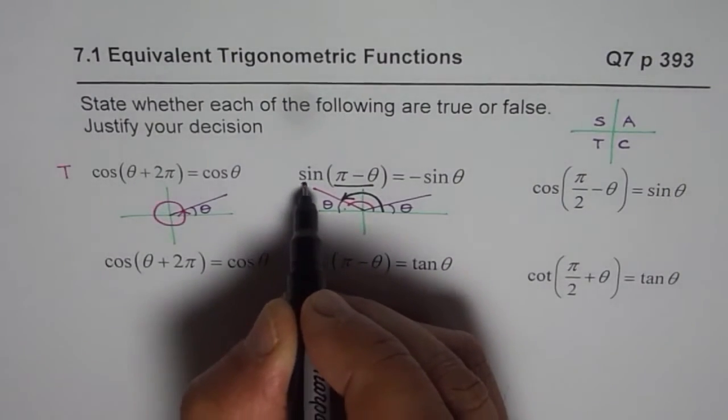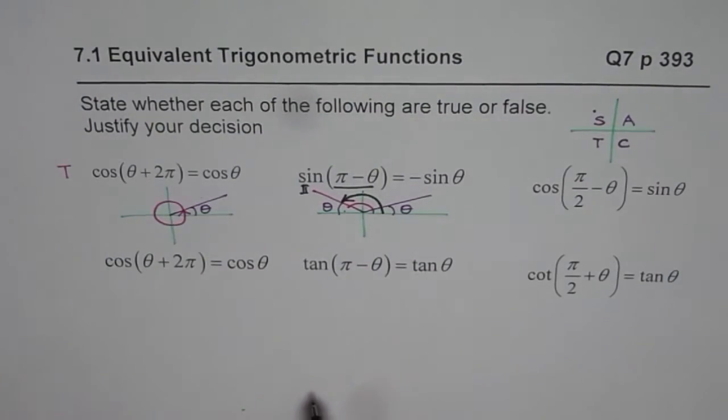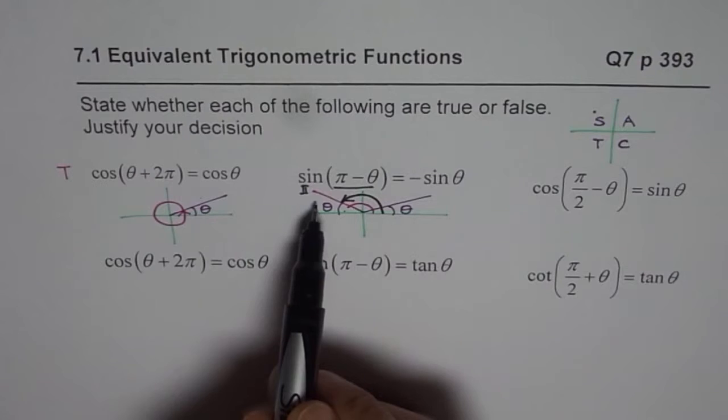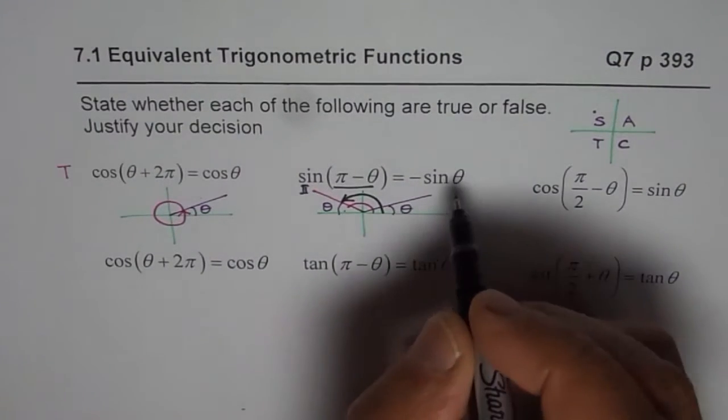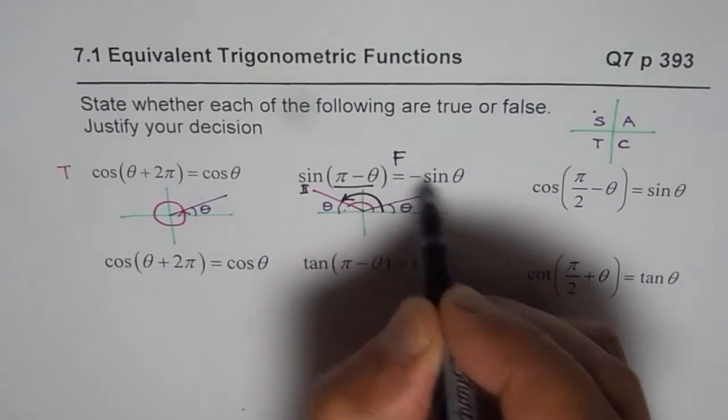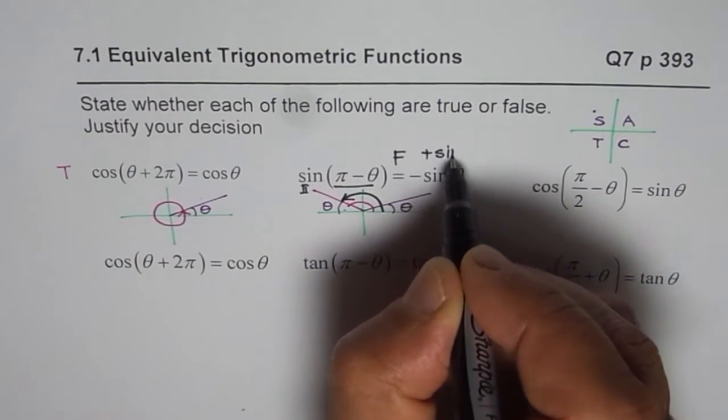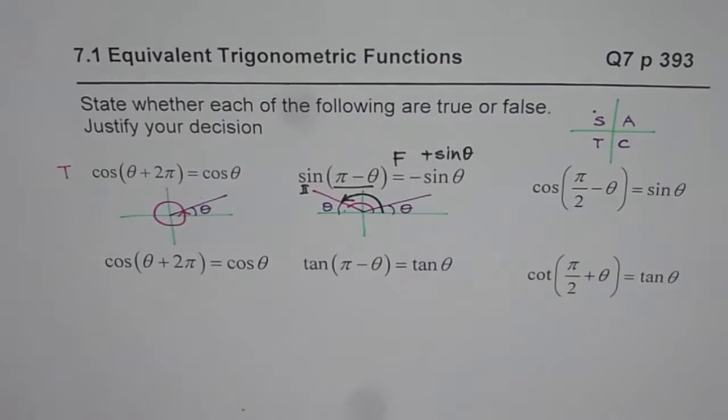Since you are in quadrant 2 and we know sine is positive, we are expecting a positive answer. But what do we have here? Negative. So this statement is false. It should be positive sine theta, correct? So that is how you can figure it out.